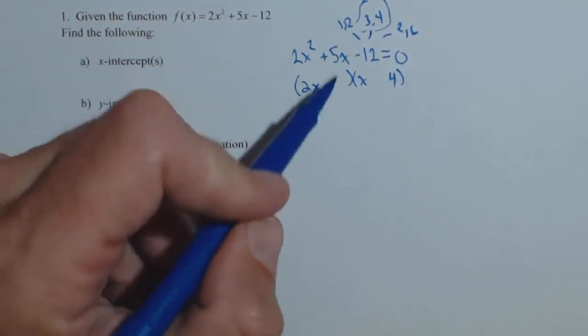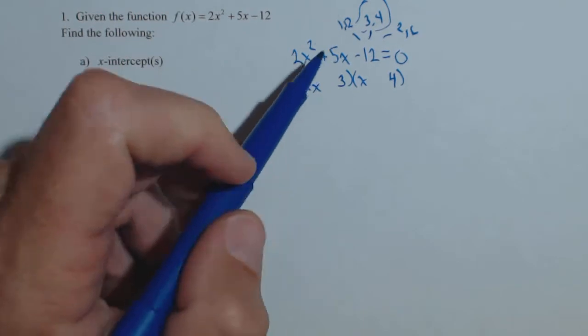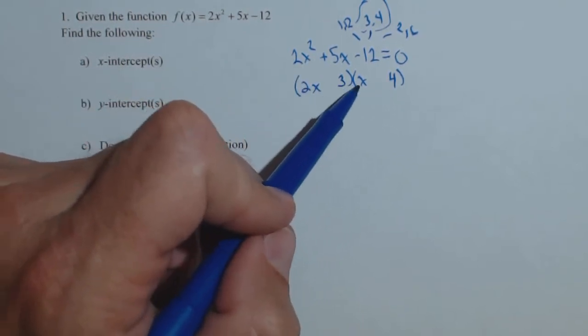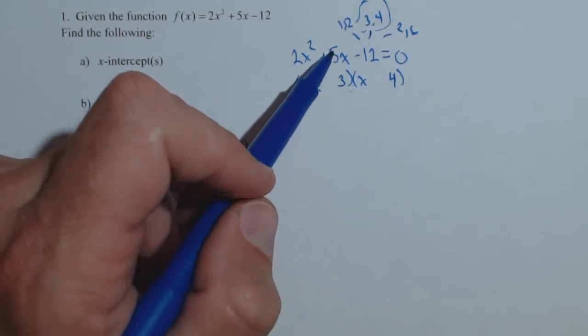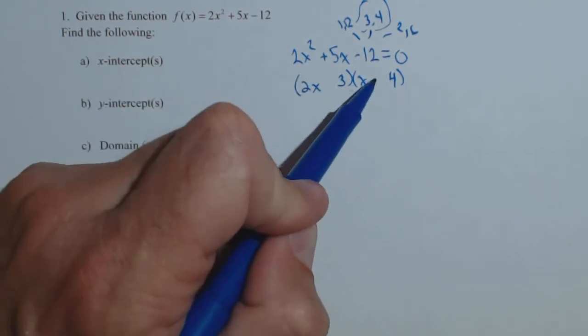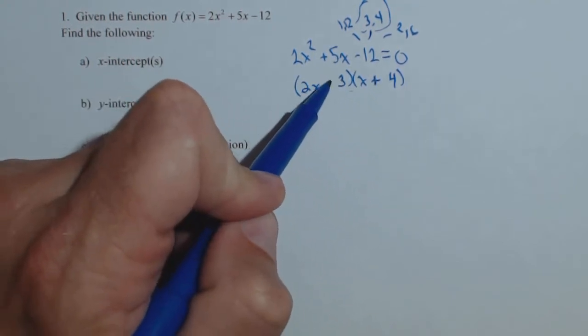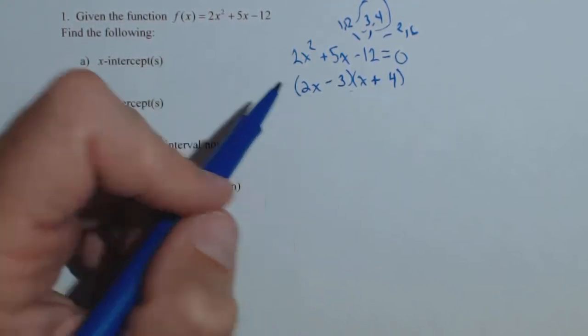And it worked when I had the 2 times the 4, which means the 3 has to be here. So that gives me an 8x and a 3x, the difference of which is 5x. I want it to be a positive 5x. So I need a positive 8x and a negative 3x, and there are my factors.